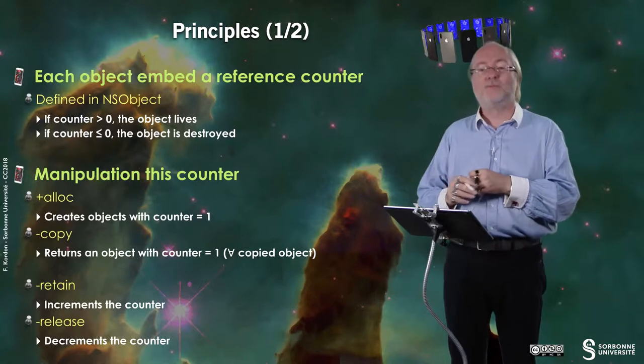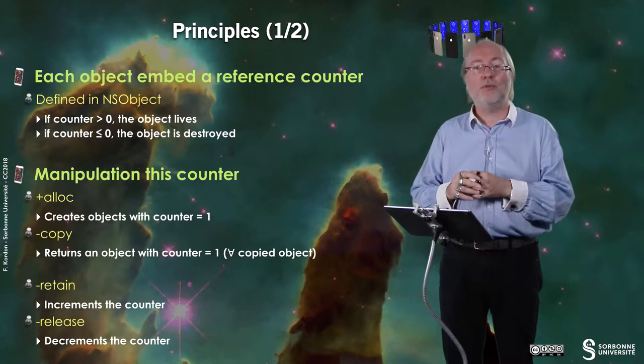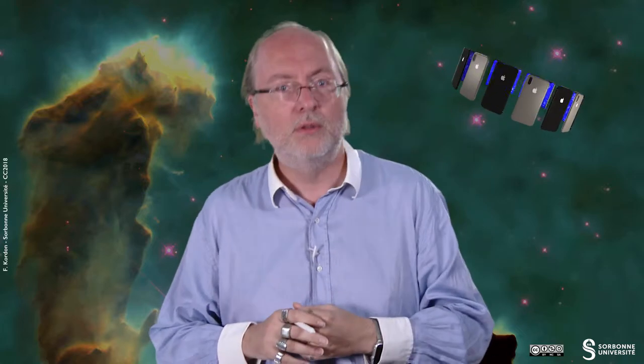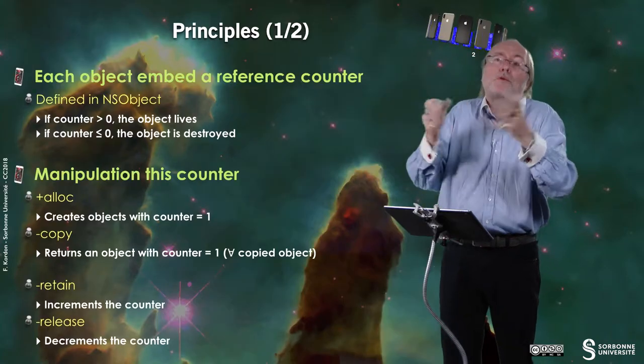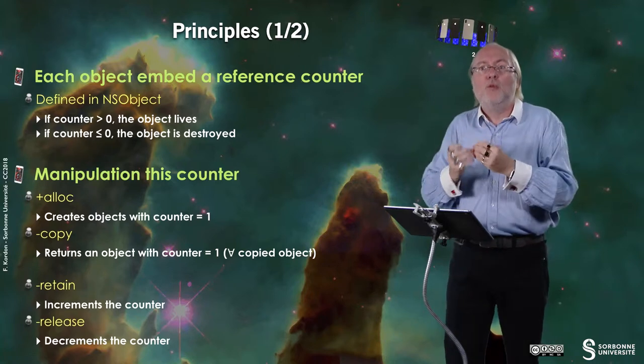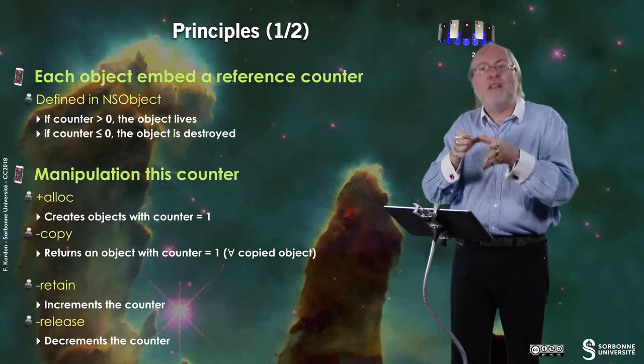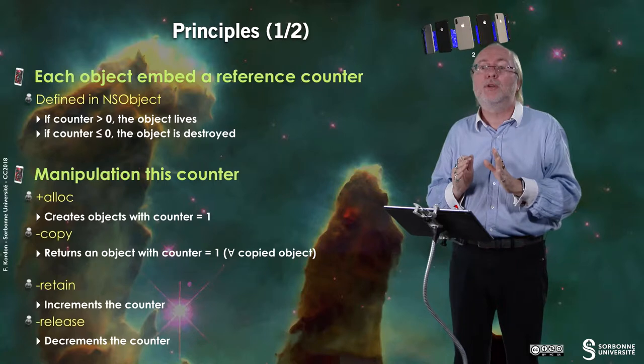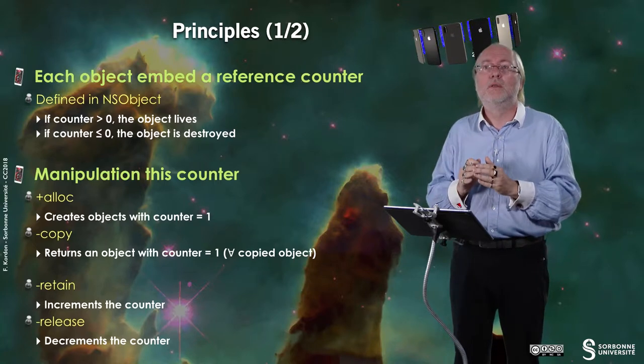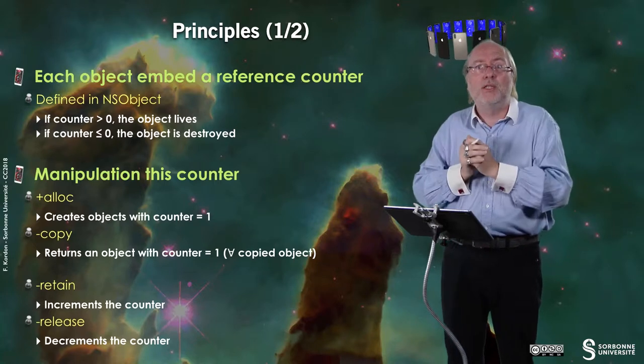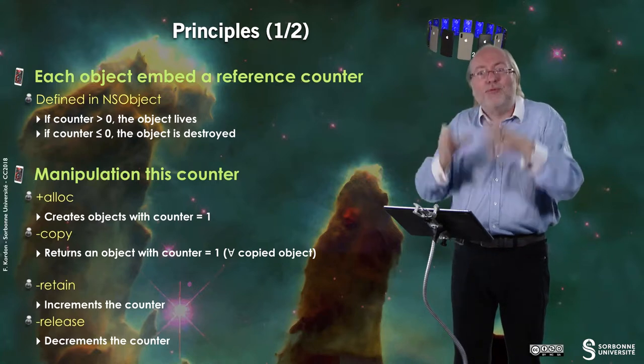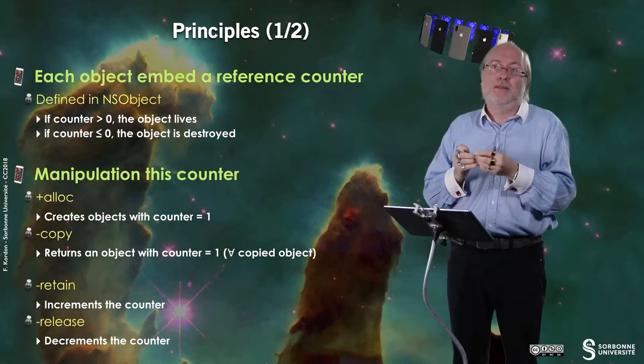You also have another method that has an impact on this counter which is copy. I have an object. This object may have a counter set to an arbitrary high value depending on the number of owners or co-owners it has. But the copy will not embed the same value for the counter. When you copy, it's an exact copy of the object except for the counter which is set to one, whatever is the value of the counter of the originating object. This is because this new copy, the object which has created it, is the only owner.